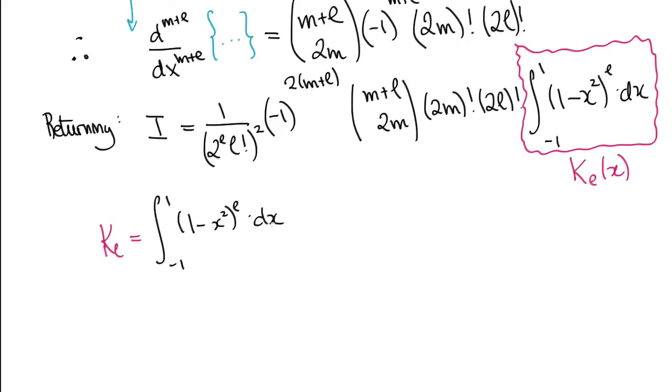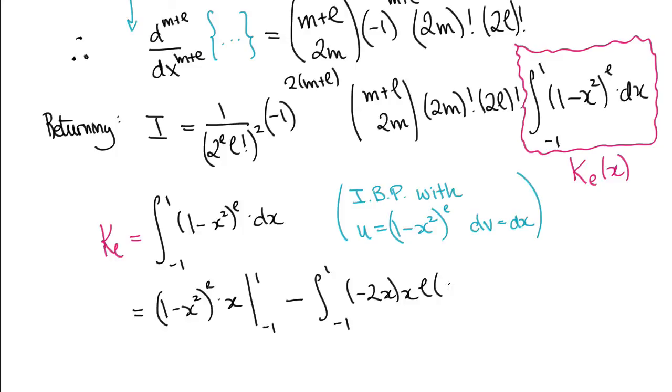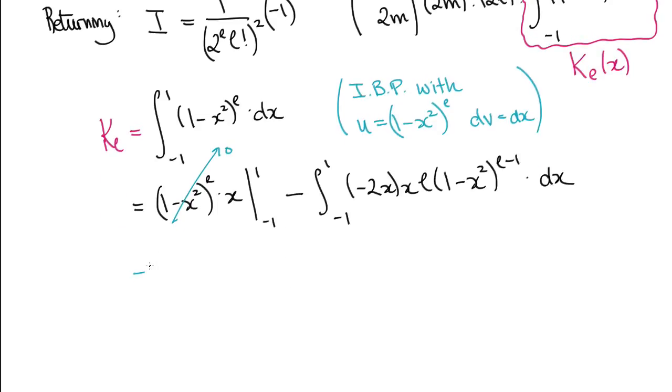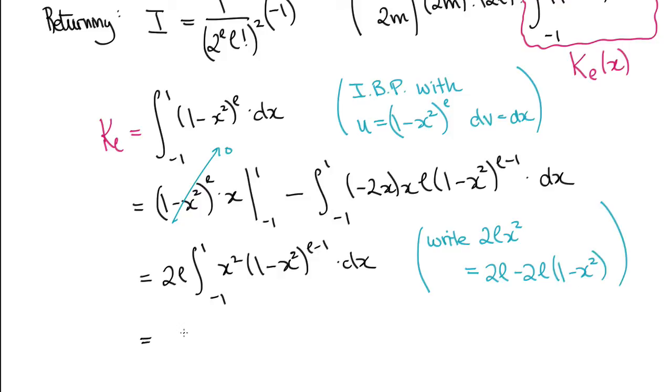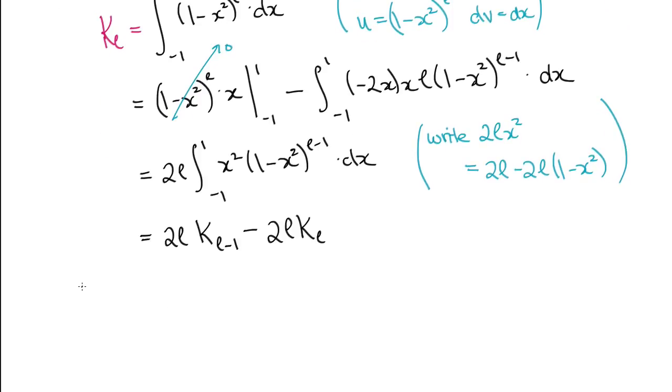Basically we apply the integration by parts once with u is equal to 1 minus X squared to the L, and dv is equal to dx. The boundary terms disappear as usual, but we're left with another integral that we can't quite evaluate on the right. We then write the integrand in a form that allows us to write the right hand side in terms of K and KL.